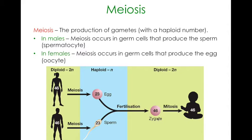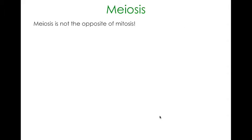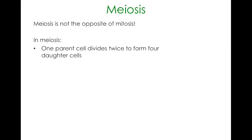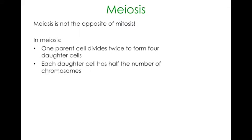Through mitosis, that zygote will then develop into a fetus and embryo. The haploid stage is where the egg and sperm are formed, and the diploid stage is when you get a full cell once again. In meiosis, one parent cell divides twice to form four daughter cells, and each daughter cell will have half the number of chromosomes. So meiosis produces gametes and sex cells.